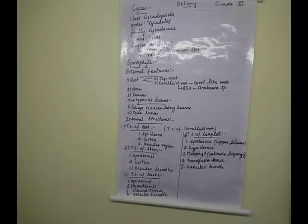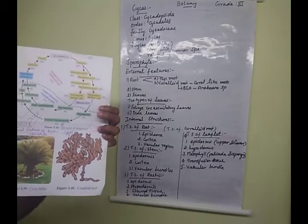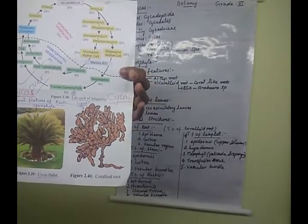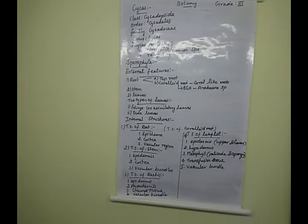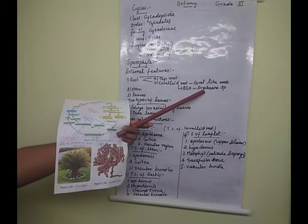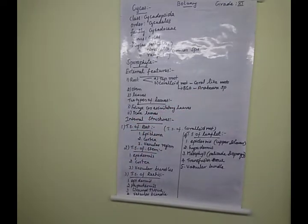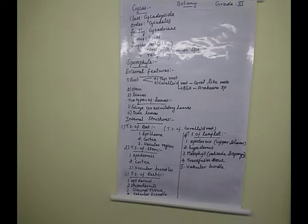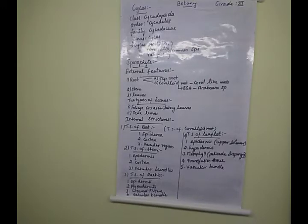In the coralloid root, the outermost layer is the epiblema. Inside is the cortex region. In the cortex, there is the presence of one of the blue-green algal species — for example, Anabaena. The major duty of this blue-green alga is to help in fixing nitrogen in the plant.